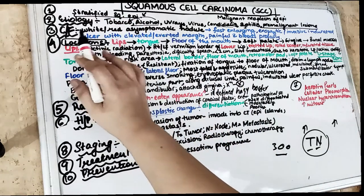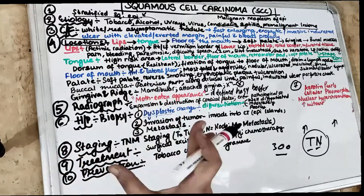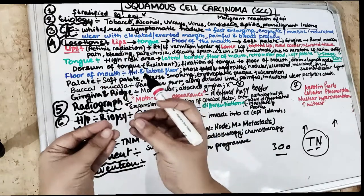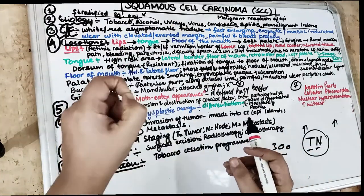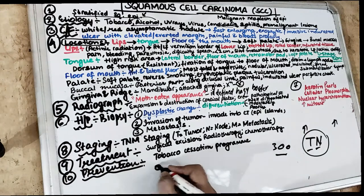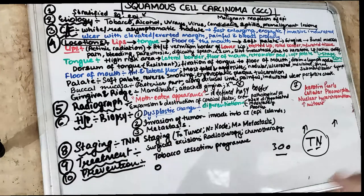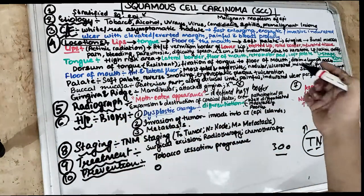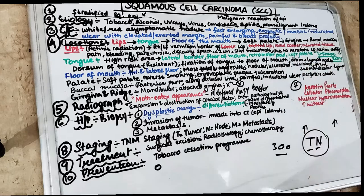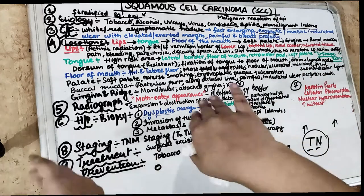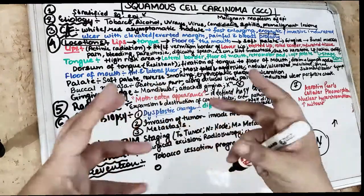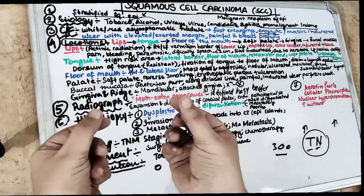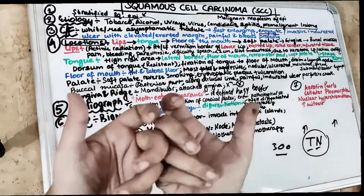Coming to clinical features — how does squamous cell carcinoma look? Initially, it is a white or red asymptomatic nodule. But later on, it enlarges very fast and grows into an exophytic, invasive, indurated lesion — an indurated ulcer. The ulcer has elevated margins; if you look at the margin of the ulcer, they are elevated or we can say everted margins.